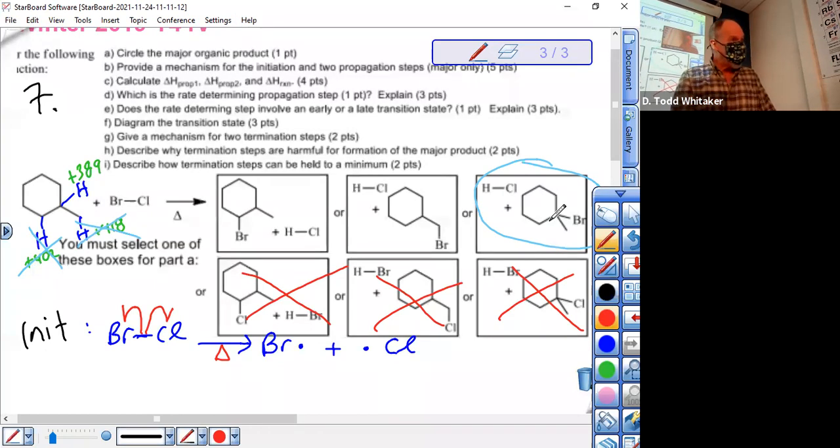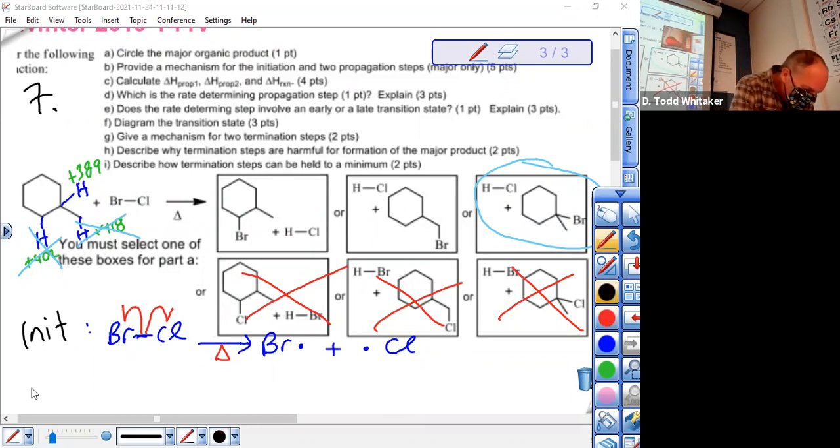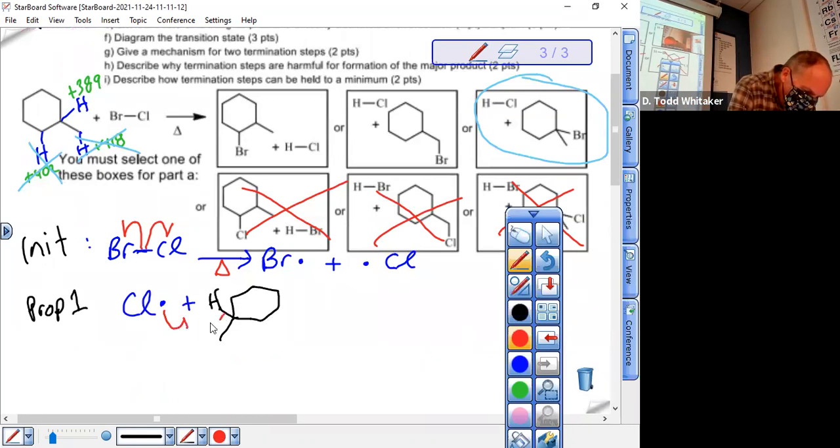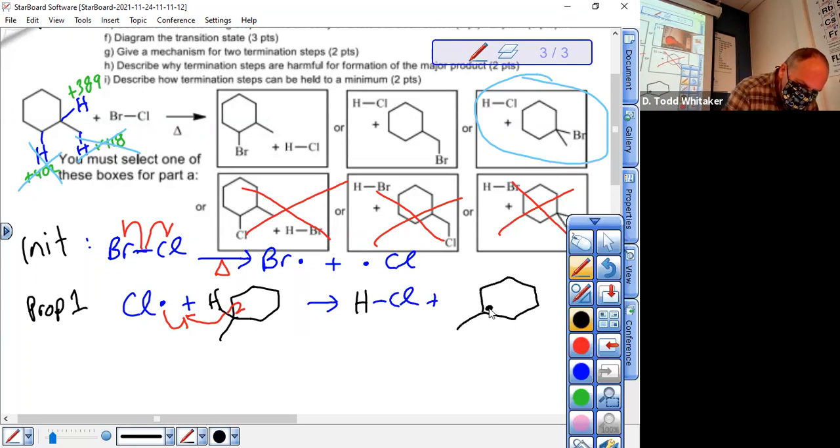And that was a lot of work for one point. I do want to remind you that if you got the one point wrong, it doesn't mean you're ruined for the rest of this question. I'm just going to follow through your choice of product and see if you do the right mechanism for your choice of product. I need the initiation and two propagation steps. I need the mechanism.